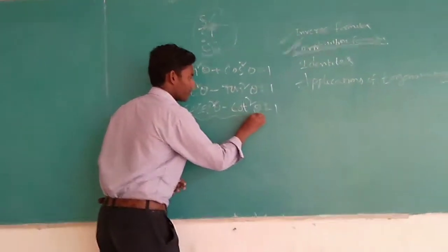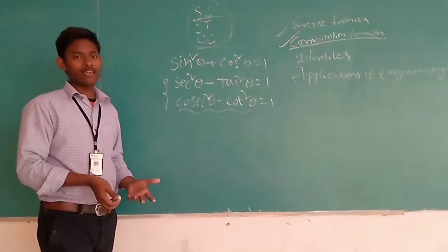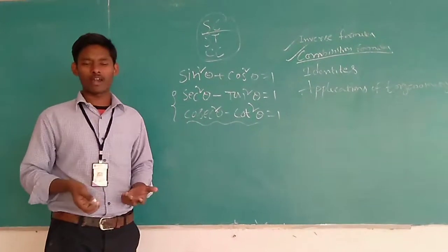Next, you may confuse here because both are C's. Then which C comes first? Whether it is cot theta or cosecant square theta. How can we remember them now?